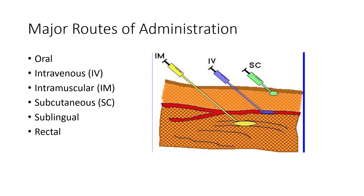We'll briefly touch on major routes of administration: oral, intravenous, intramuscular, subcutaneous, sublingual, and rectal. Oral means swallowing a pill; IV is injected into a vein; intramuscular is injected into muscle; subcutaneous is injected just into the skin; sublingual is under the tongue; and there are rectal suppositories. All of these have different speeds of absorption.